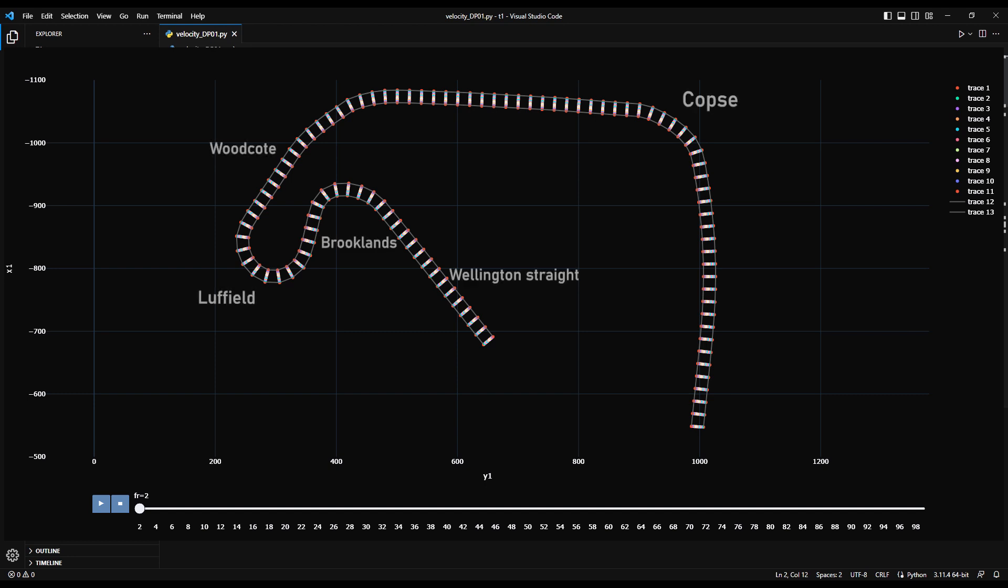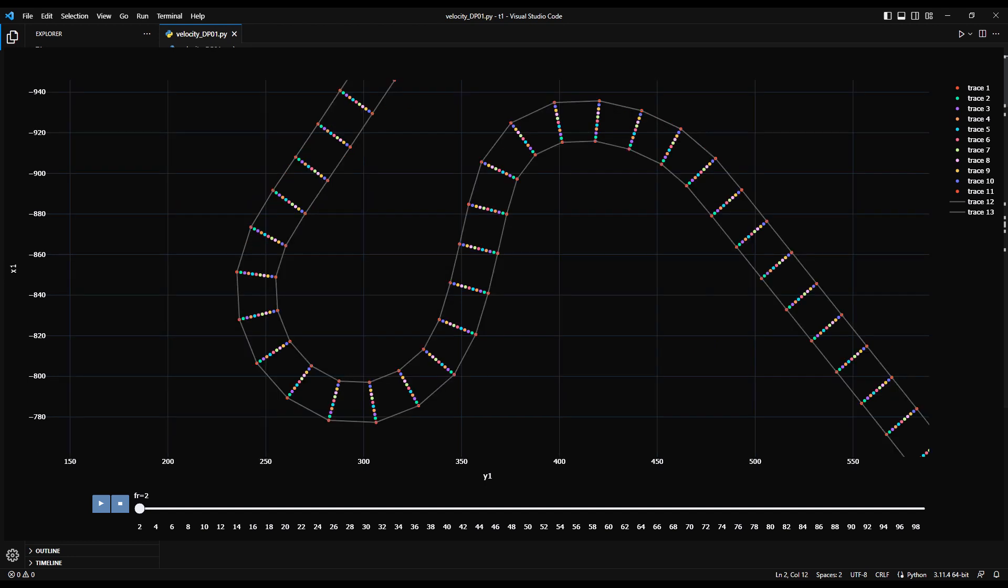This is a part of the Silverstone track leading up to the Copse corner. As you can see we have divided the racetrack in stages. Each stage has 11 possible positions which are shown by the small circles.